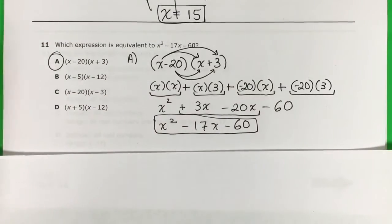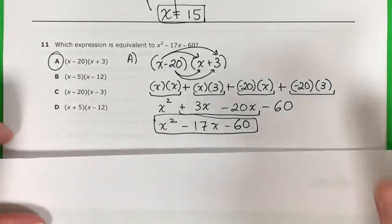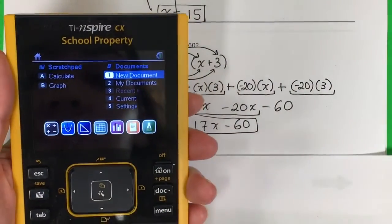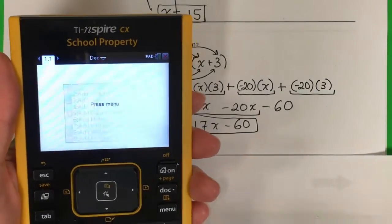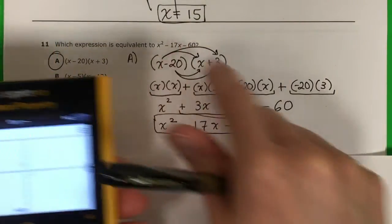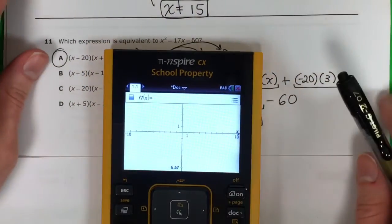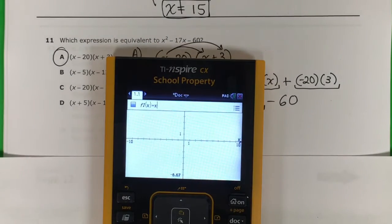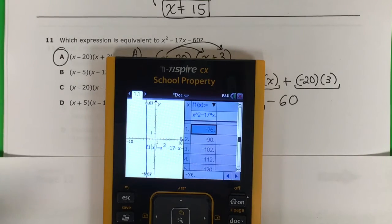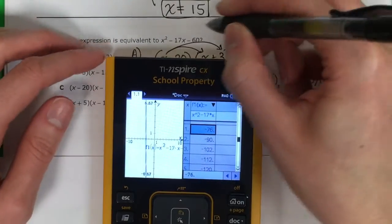Now if you want to check, let me show you how you can check — you're going to need your calculator. Go to the graph. Let's put the original expression in the calculator: x squared minus 17x minus 60. Enter. And let's go to the table with Control T, and let's pick some points to check. This is the easy way.